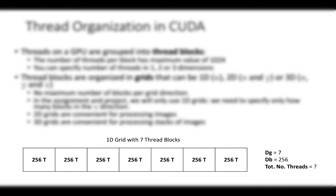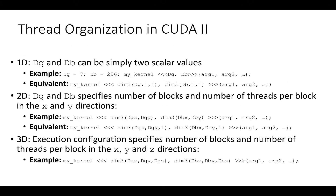Just to give you an example of the thread organization, we can look at the figure at the bottom of this page. In this case, we have a one dimensional grid with seven thread blocks, so dg will be seven. Each block includes 256 threads, so db will be 256. In total, we will have dg multiplied by db, which is equal to 1792 threads running on the GPU. In the one dimensional case, the number of thread blocks and the threads per block are simply two scalar values, dg and db. We initialize first dg and db to 7 and 256, and then include them between the triple angle brackets.